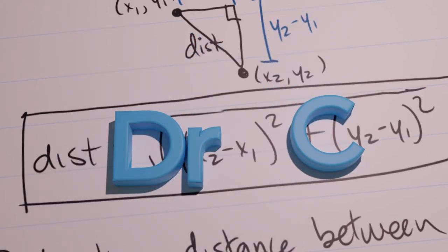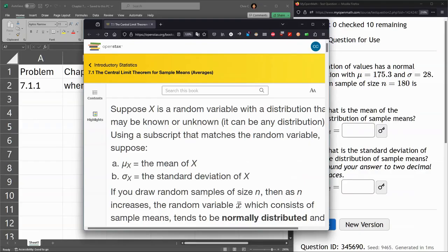We're now looking at 7.1, which is a central limit theorem for sample means. And in this, we're going to not just draw one from a population, we're going to draw a set of size N.